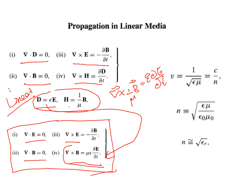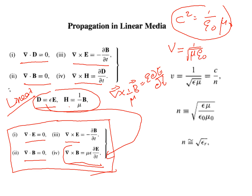We know that velocity — we already learned c squared equal to 1 by epsilon 0 times mu 0. Electromagnetic waves propagate through a linear homogeneous medium with a speed v. Through vacuum they propagate with speed c, but through a linear homogeneous medium they propagate with speed v equal to 1 by root of mu epsilon. Epsilon 0 is for free space, so the speed of an electromagnetic wave in a linear homogeneous medium is 1 by root of mu times epsilon.